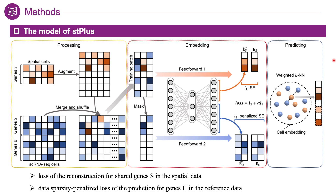The input includes the target spatial data and the reference single-cell RNA-seq data profiled from similar tissues as the spatial data. The set of genes shared between spatial data and reference data is denoted as genes S, while the set of genes unique to the reference data is denoted as U. Users can specify any genes in the reference data to be predicted. For the spatial data, ST-plus augments the expression of genes U with zeros and unifies the gene order with that of reference data. Then, the two datasets are merged together and shuffled across cells to form training batches.